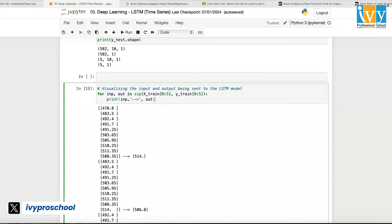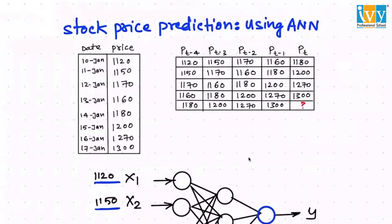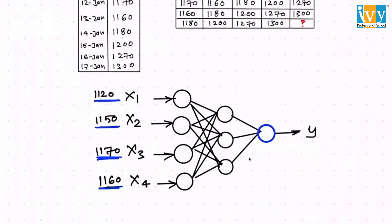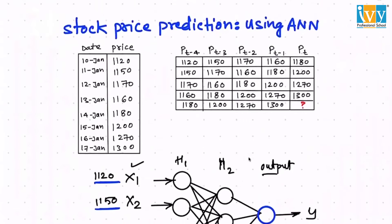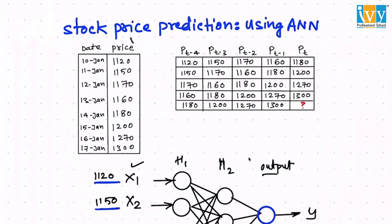When you are using an artificial neural network, you will be defining certain layers — let's say the input layer, then the hidden layer, hidden layer number two, and then the output layer — and then you will be doing the prediction. So how will you be learning this data? You have this column of price: on this date the price was this, on this date the price was this, and so on.